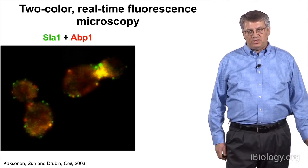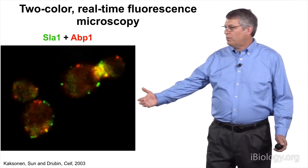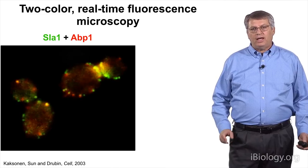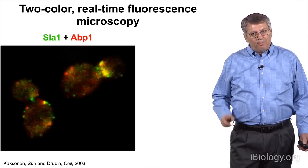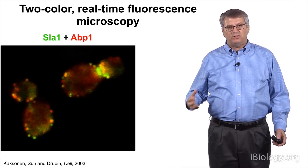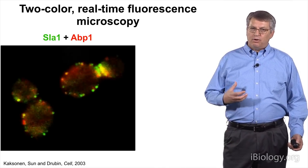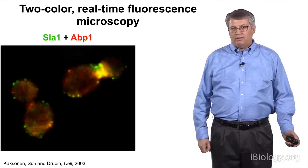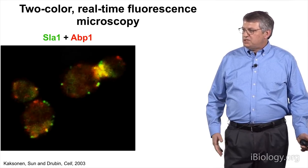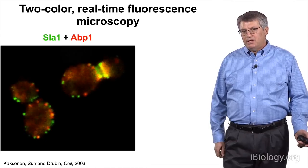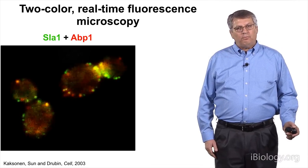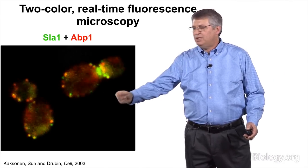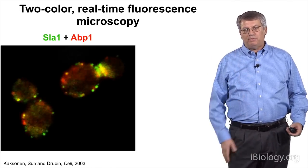What was really going on was revealed when Marco imaged these two proteins in real time. What you see is that every patch, when it's first born, is green, and invariably that patch, after a short time, will turn yellow, and then at the end of its lifetime it will turn red. When the patch turns yellow — in other words, when actin starts to assemble on the patch — it starts to move, as though forces from actin assembly might be moving this patch into the interior of the cell. Marco also used medial focal planes in his analysis, which allowed him to look at events happening at the surface of the cell from the side.